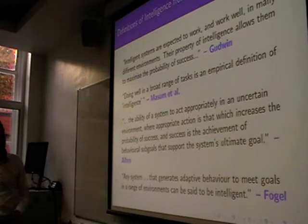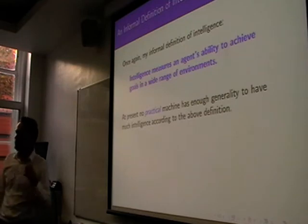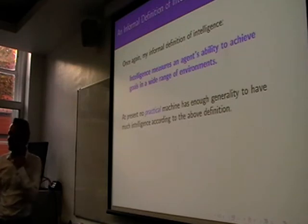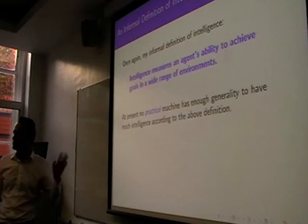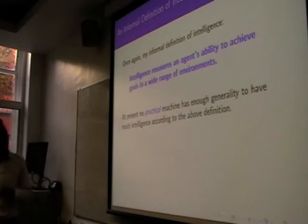Any system that generates adaptive behavior to meet goals in a range of environments needs to be intelligent. So hopefully you believe me now that while you may not agree with my particular definition of intelligence, at least it's not completely off base. It's an agent's ability to achieve goals in a wide range of environments.